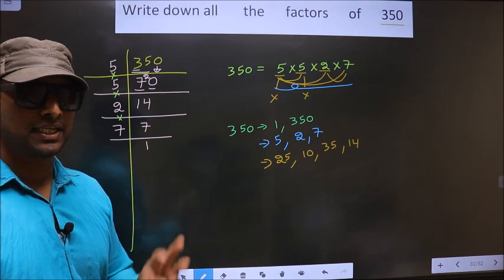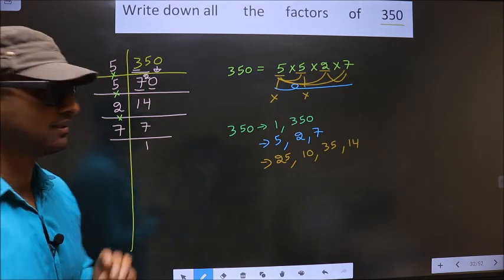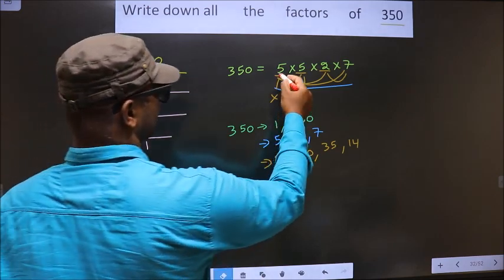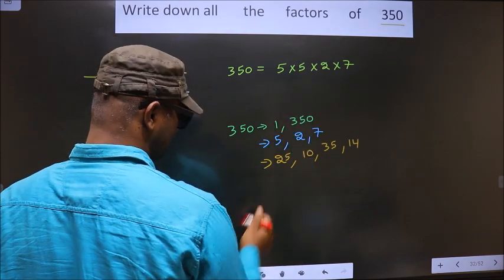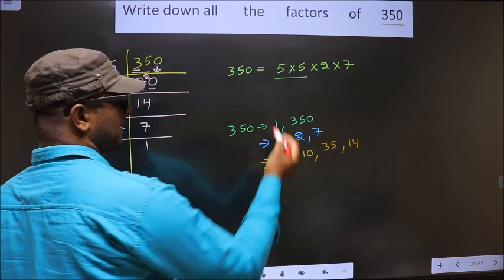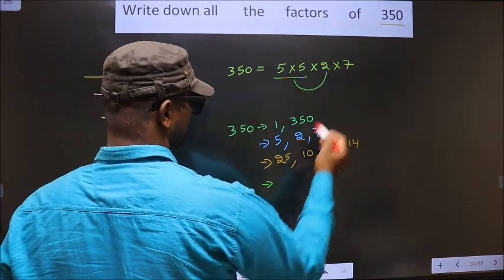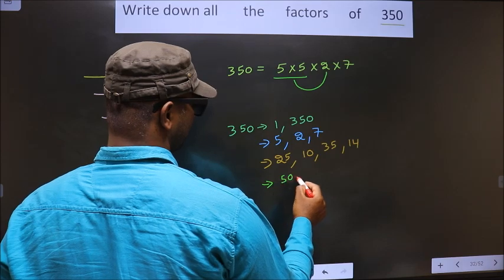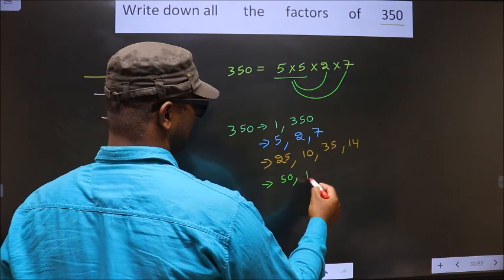Now you take the combination of 3 numbers. How do we take? See. First, I fix these 2 numbers. That is 5 into 5 is 25. Combine with that 2. 25 into 2 is 50. Now I combine with 7. 25 into 7 is 175.